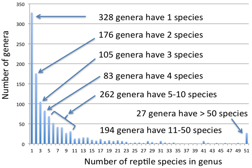A genus is a taxonomic rank used in the biological classification of living and fossil organisms, as well as viruses, in biology. In the hierarchy of biological classification, genus comes above species and below family.